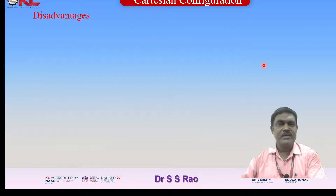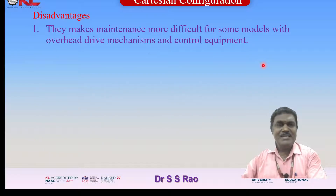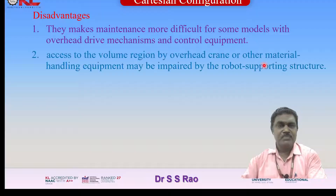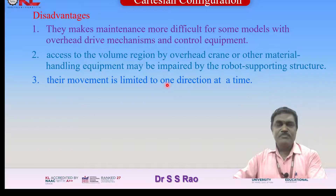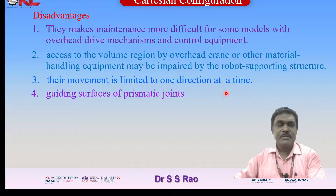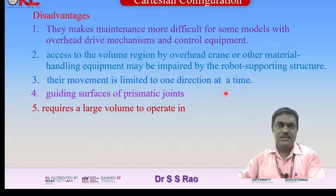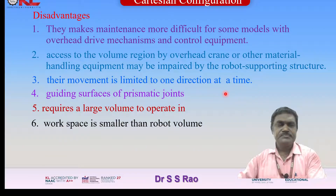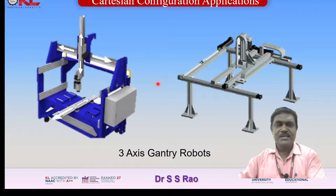The disadvantages include: maintenance is more difficult for some models with overhead drive mechanisms; access to the volume region may be impaired by the robot's supporting structure, similar to an overhead crane; movement is limited to one direction at a time; guiding surfaces of prismatic joints require a large volume to operate; and the workspace is similar to the robot volume.